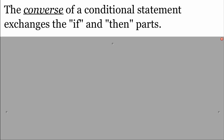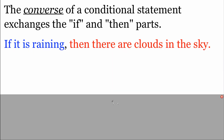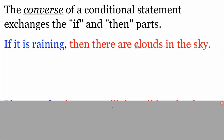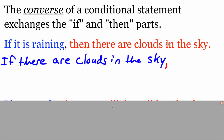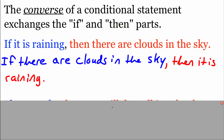The next thing we could do is write out something called the converse of a conditional statement. When writing out a converse, we're going to exchange the if-and-then portions of our statement. Looking at this first statement: 'If it is raining, then there are clouds in the sky.' To write out the converse, we flip the order of the if-and-then parts. We still start with an 'if,' but now we take that second portion: 'if there are clouds in the sky, then it is raining.' That's the converse — we switched the if-and-then pieces around.